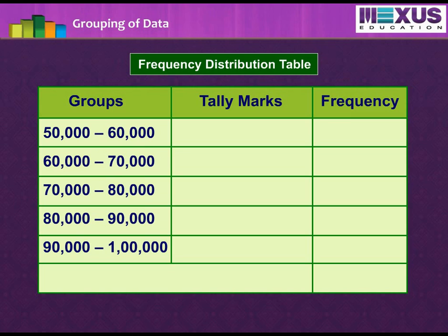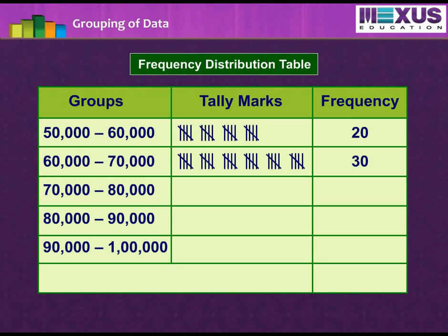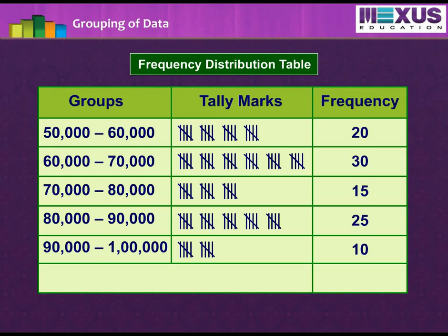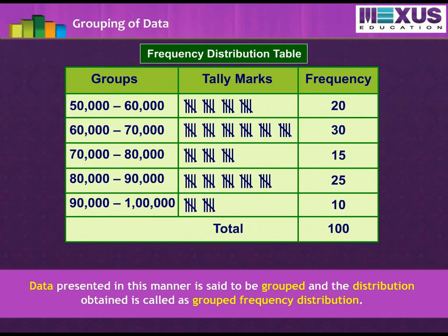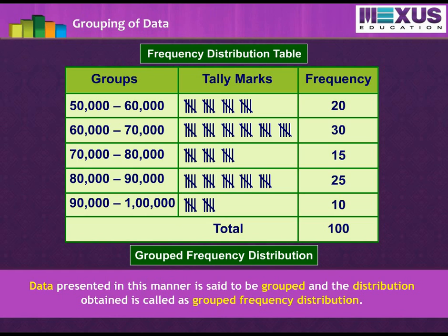Now let's tabulate and obtain a frequency distribution of the number of observations falling in each group. Thus, we get the frequency distribution table as follows. Data presented in this manner is said to be grouped, and the distribution obtained is called a grouped frequency distribution.